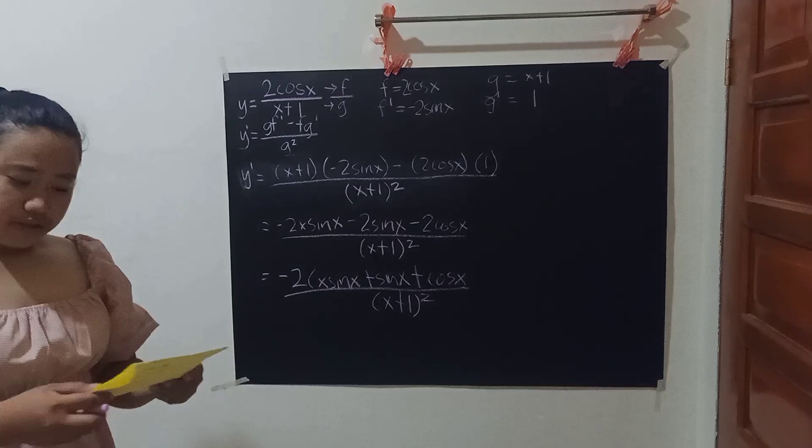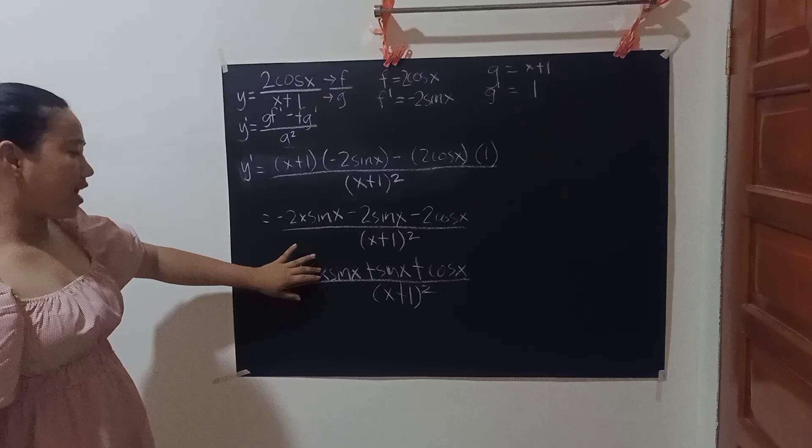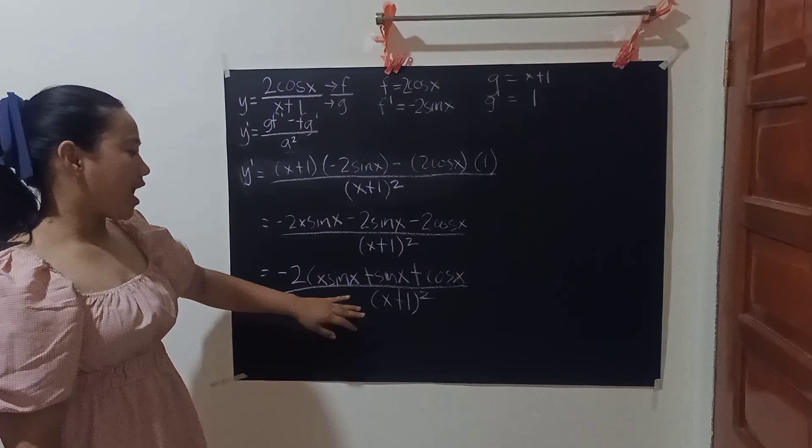Therefore, the derivative of this function is negative 2 times (x·sin(x) plus sin(x) plus cos(x)) over (x plus 1) squared.